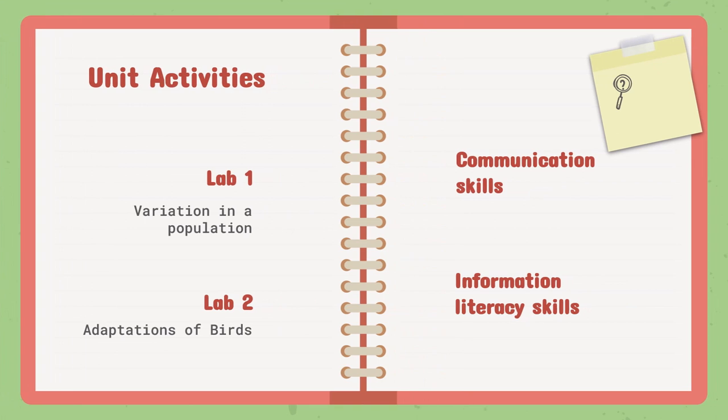As for the units activities, we are going to have lab one, which is variation in a population. We are going to the lab and we're going to view variations of different populations and then adaptations of birds regarding their beaks, their wings. How did it contribute to the, how did the environment contribute to its natural selection and theory of evolution. As for the skills that are, we're going to be involved in this unit is communication skill and information literacy skills.